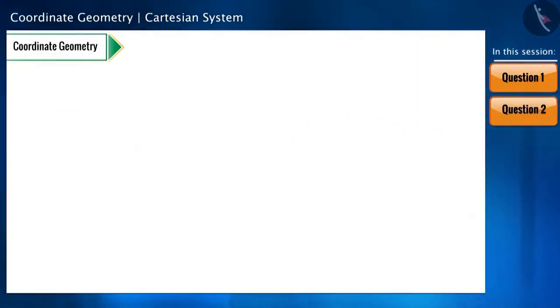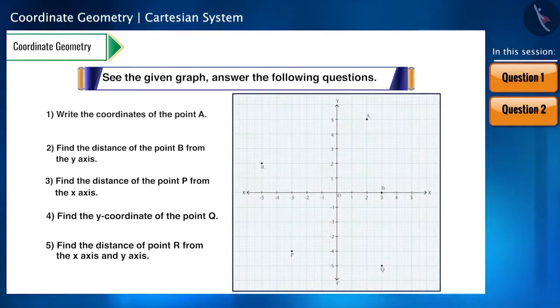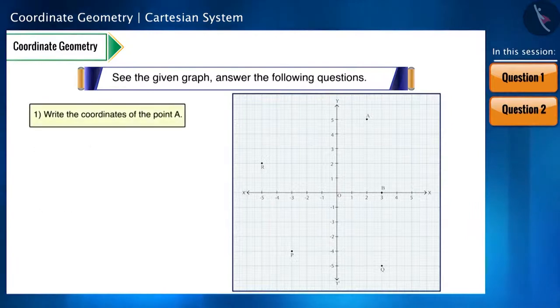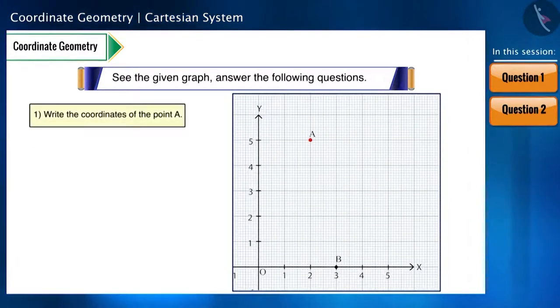Let us see the next question and answer the questions asked by looking at the graph. Let's take the first sub-question. Write the coordinates of the point A. To write the coordinates, we draw perpendicular lines from the given point to the X and Y axis and points where the lines intersect the X and the Y axis will be the X and Y coordinates respectively. Drawing perpendicular lines from the point intersects the X axis at 2 and the Y axis at 5.